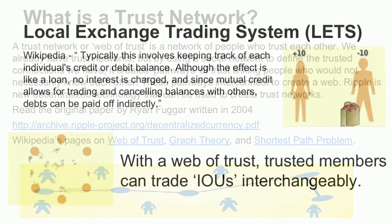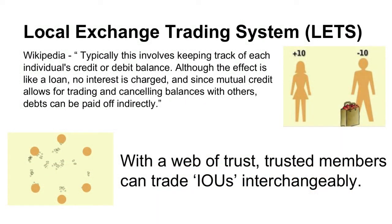A little bit about local exchange trading systems. From Wikipedia: they typically involve keeping track of each individual's credit or debit balance. Although the effect is like a loan, no interest is charged. Since mutual credit allows for trading and canceling balances with others, debts can be paid off indirectly — meaning you don't have to do direct trades with people. If you have apples and I have oranges, you don't want oranges, you can still trade me for those oranges. It's just an IOU for your apples to someone else in the network. With a web of trust, trusted members can trade IOUs interchangeably.